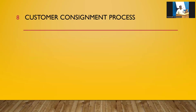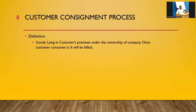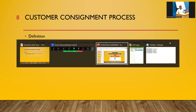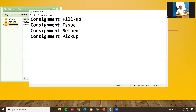Customer Consignment is one of the key business processes in SAP SD. Definition: Goods lying in the customer's premises remain the ownership of the company. Once the customer consumes the goods, it will be billed. There are four types of consignment documents: Consignment Fill-up, Consignment Issue, Consignment Return, and Consignment Pick-up. The document types are KB, KE, KR, and KA respectively.